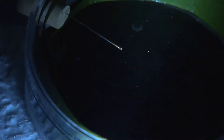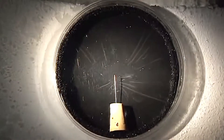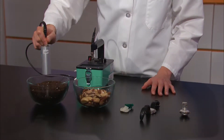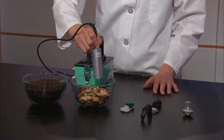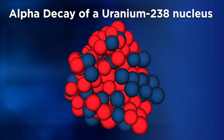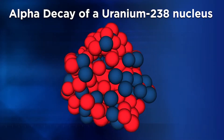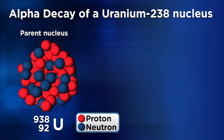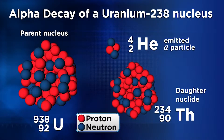Unit 11 began with our students using cloud chambers to visualize nuclear particles, and I showed how a Geiger counter can be used to hear and count nuclear particles. Through these processes, we learned how to identify the different types of nuclear decay products found in radioactive elements.